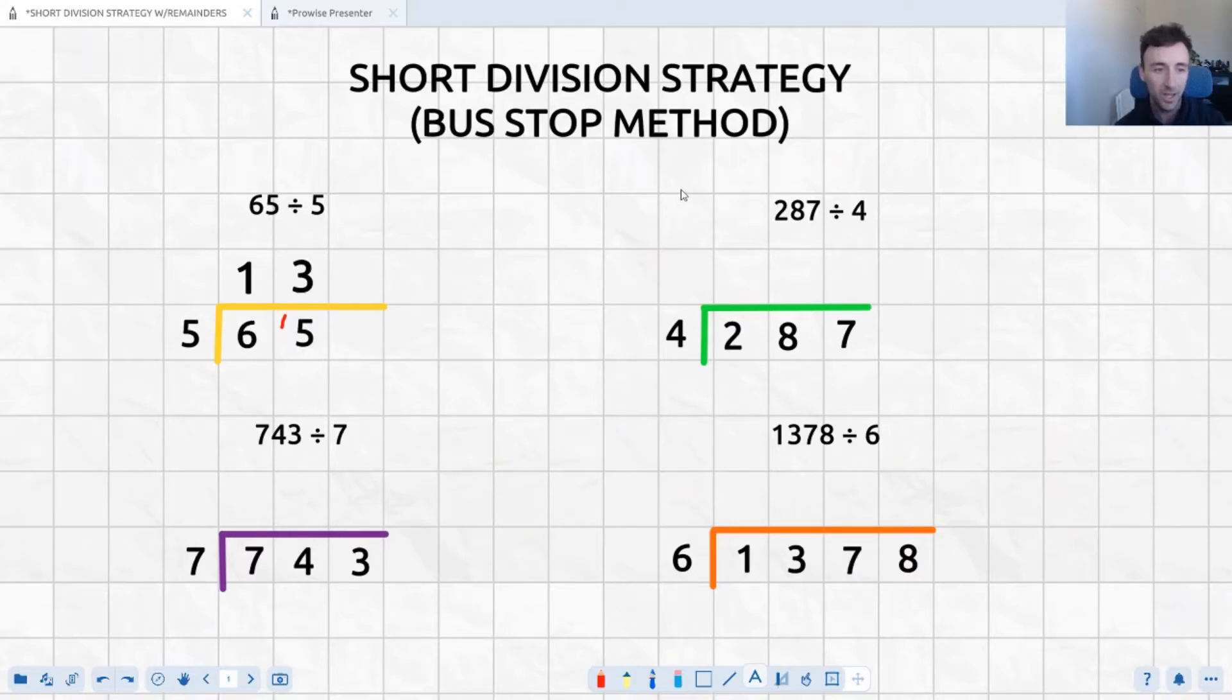Move across to our green example. Now we can see already 287 divided by 4 is a bit more difficult. However, because 4 is an even number and 7 is an odd number, they're not going to be divisible by another, so we're going to end up with a remainder for this one, but let's get started anyway.